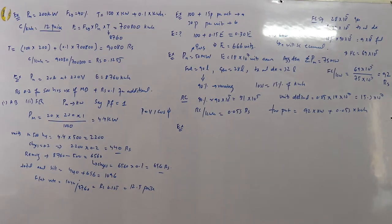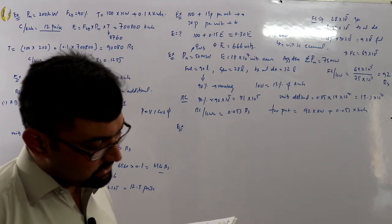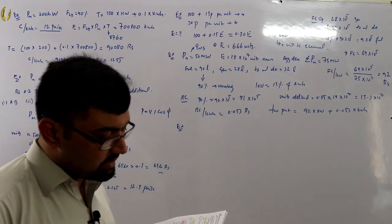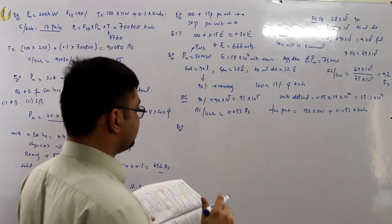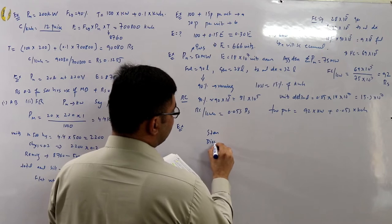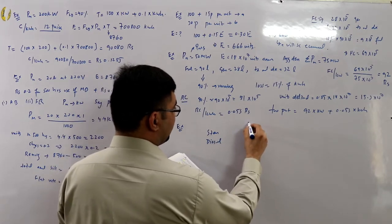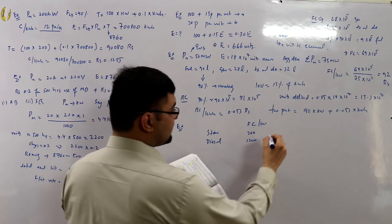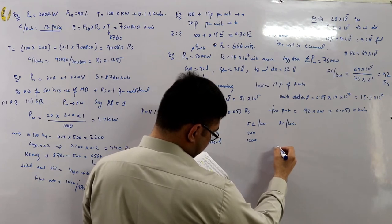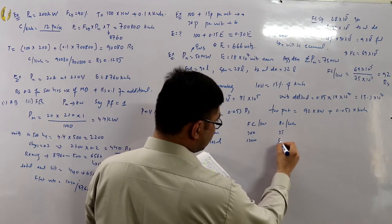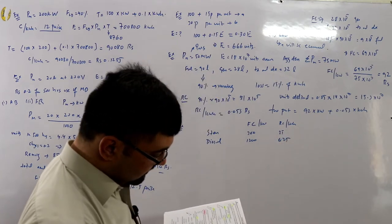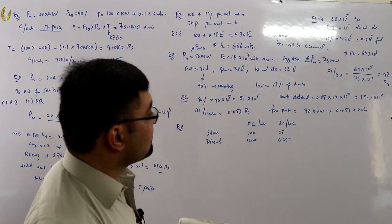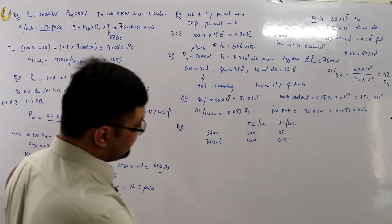Example 5.7: Determine the load factor at which the cost of supplying electricity from a diesel power station equals that from a steam station. Fixed charges: steam — 300 rupees per kilowatt; diesel — 1200 rupees per kilowatt. Running charges: steam — 25 paisa per kilowatt hour; diesel — 6.25 paisa per kilowatt hour.